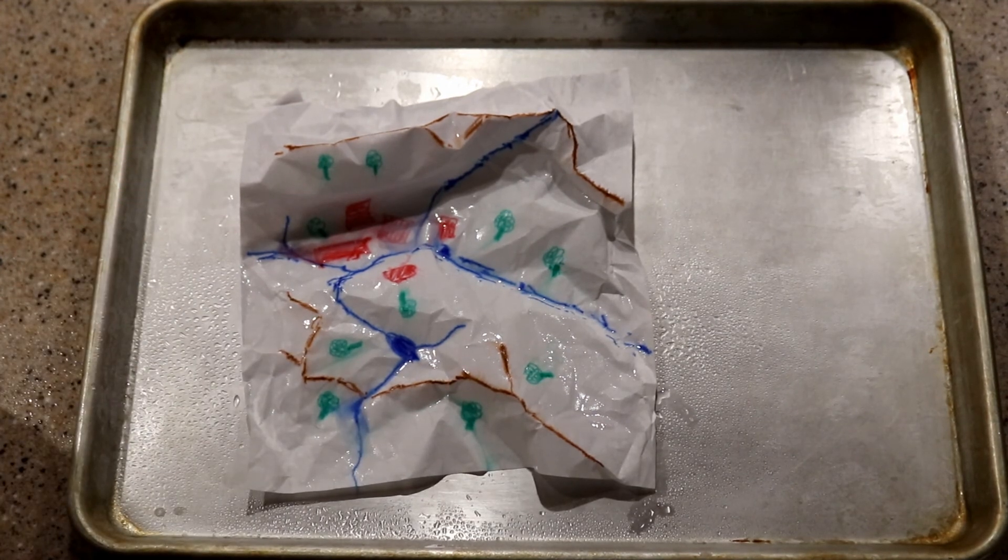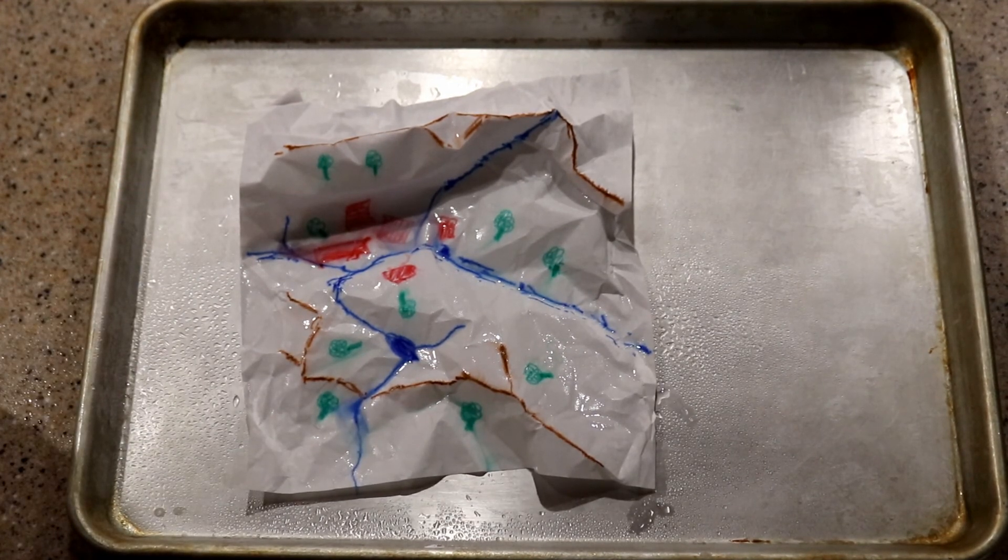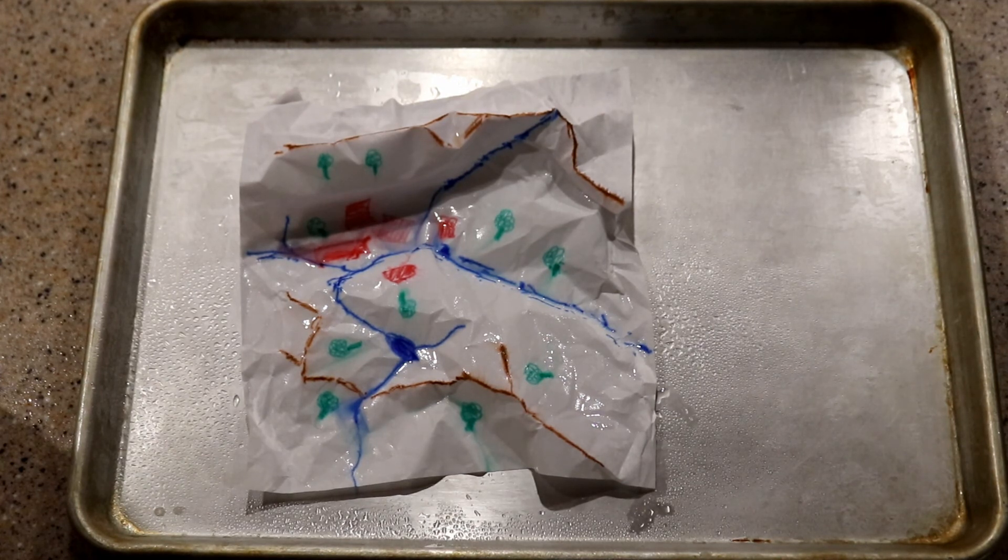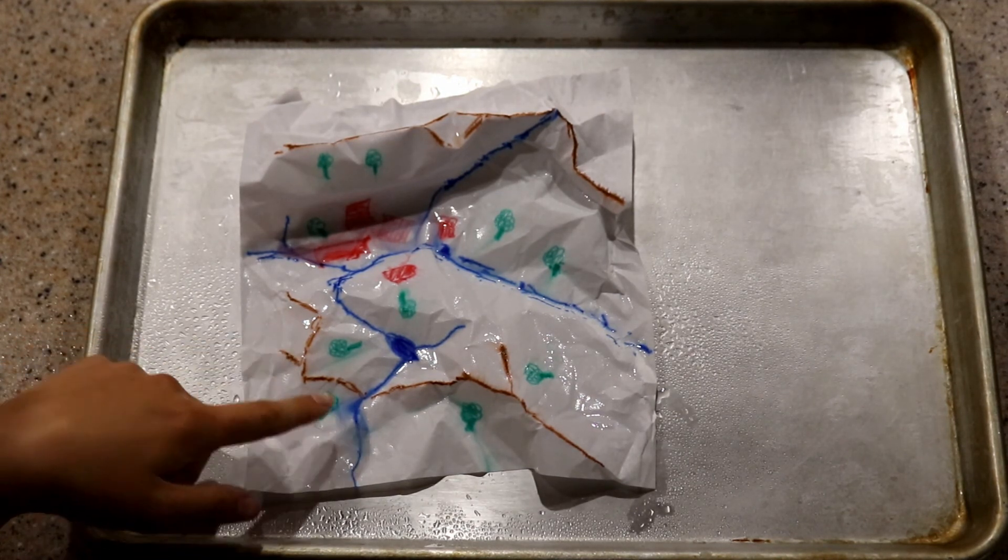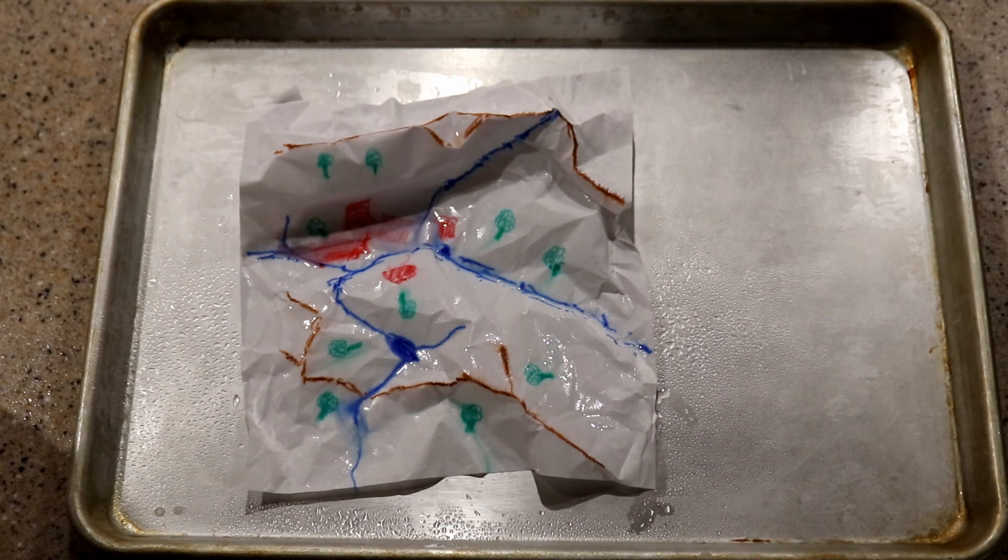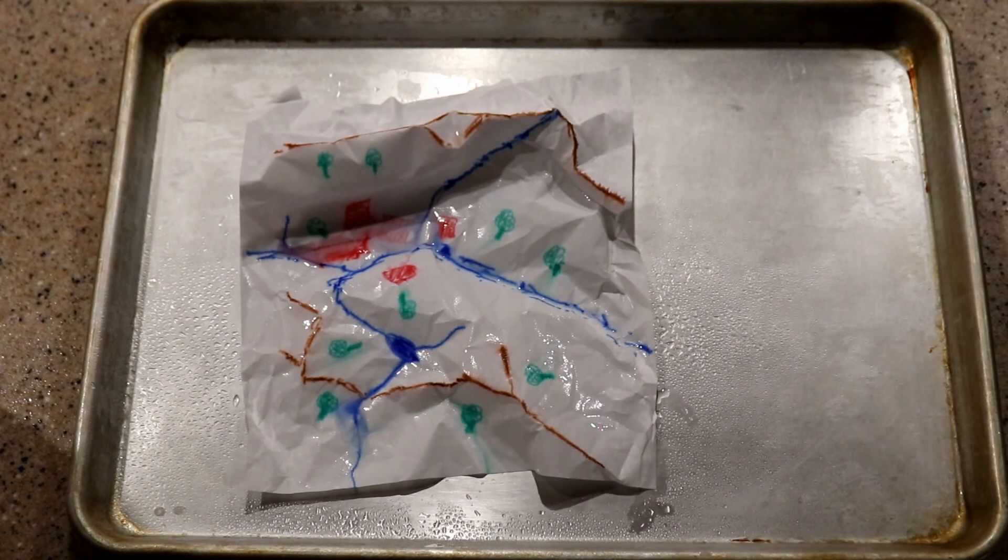So what this is representing is how everything affects your watershed. So this is your brown soil that's running into your water. The trees can represent your grass clippings and your leaves flowing into the water. The red is your towns and so that could be oil from the cars and gas from the cars leaking into the rivers.